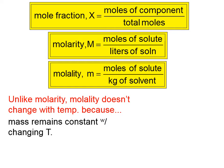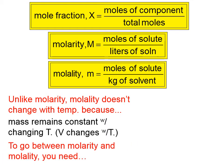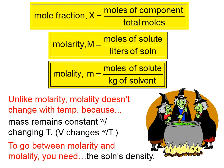If you look at the molarity equation, you can see that in the denominator we have liters of solution, whereas for molality we have kilograms of solvent. When you heat a solution, its volume — that is, the number of liters — changes slightly, but the mass doesn't change. So we have to be careful with molarity because it can change a bit if the temperature changes. If we want to convert between molarity and molality, we need the solution's density, because density is what connects mass and volume.